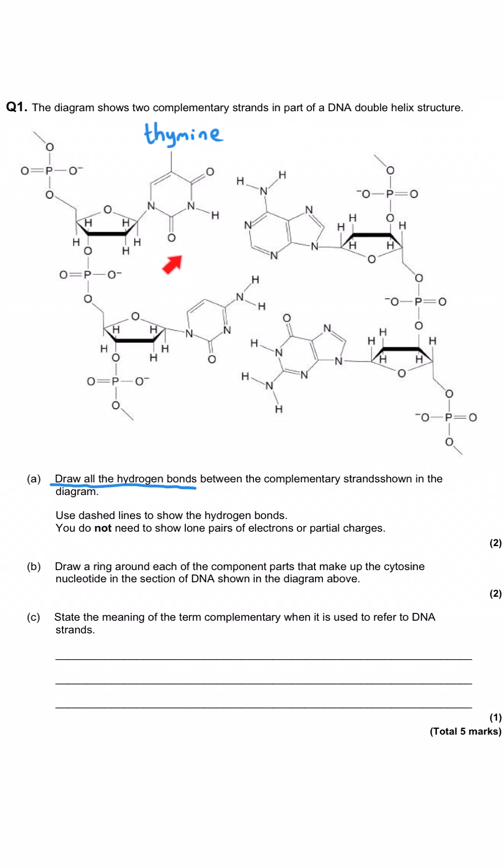And so what we need to do is we need to look at these pictures and we need to recognize this as the base thymine. And this must therefore be adenine. And it is. And we need to remember that thymine and adenine form using two hydrogen bonds. And then it's just a case of adding them in this position. And because we're drawing a dotted line, we don't even need to say where that hydrogen bond begins. And so just dotted line from here to here and another dotted line from here to here. And that will get us one mark for those two hydrogen bonds.